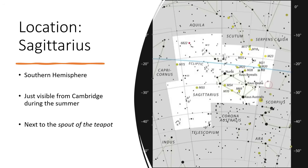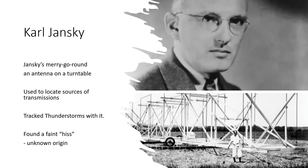Just next to the teapot, marked by the little red ring, that is the area we're interested in. The interest began with Carl Jansky and his merry-go-round — a radio antenna on a turntable — which he was using to try to identify sources of interference getting into his equipment. He was able to rotate the antenna and work out the direction from which any radio signals were coming.